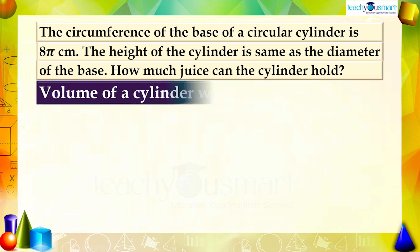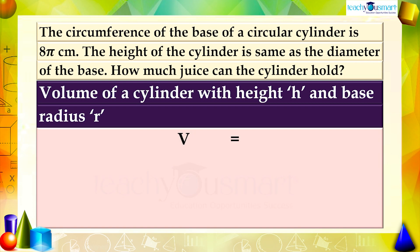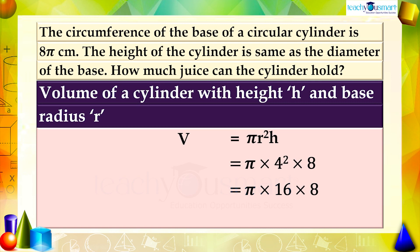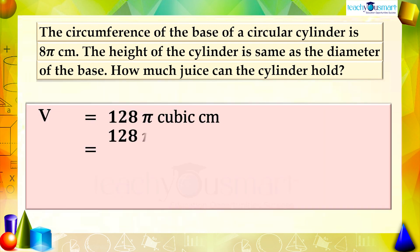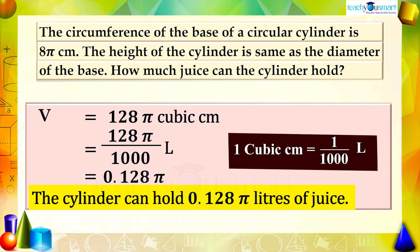We know the volume of a cylinder with height h and base radius r is V = π r² h = π multiplied by 4 squared multiplied by 8 = π multiplied by 16 multiplied by 8 = 128π cubic centimeters. Converting to liters: 128π divided by 1,000 equals 0.128π liters. Therefore the cylinder can hold 0.128π liters of juice.